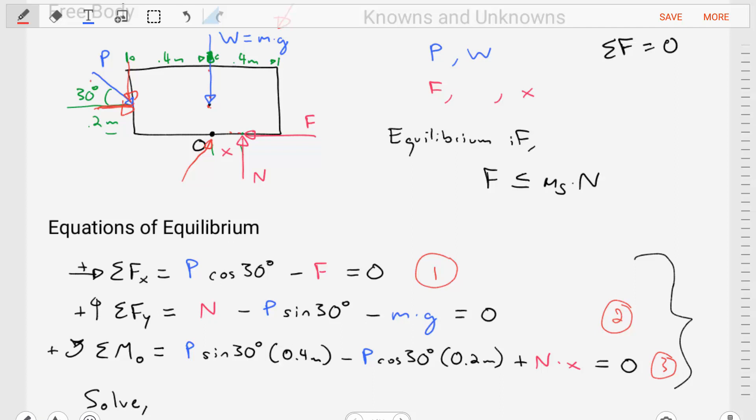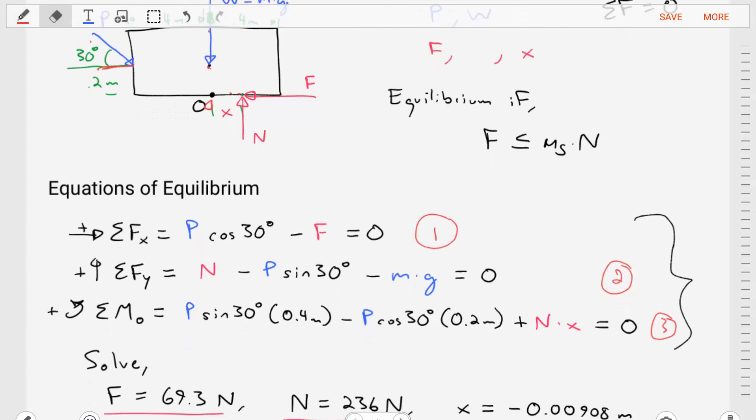We can start with the y component, which will give us a counterclockwise sense of rotation. When we do that and we see its moment arm of point four meters, we'll end up with P times the sine of 30 degrees times 0.4 meters. If we take the x component, we can see that that's going to cause a clockwise sense of rotation and it's at a distance of 0.2 meters. So we'll find negative P times cosine of 30 degrees times 0.2 meters. And then lastly, the last term would be related to N and x. The normal force N is going to cause a counterclockwise sense of rotation and it's at a distance of x from point O. So we'll do positive N times x and then we'll close out that sum of moments equation, setting it equal to zero.